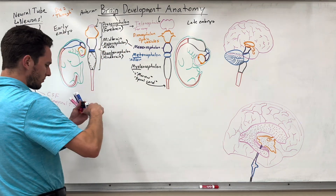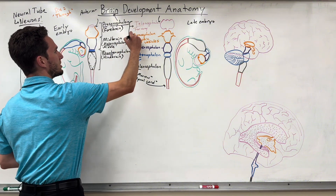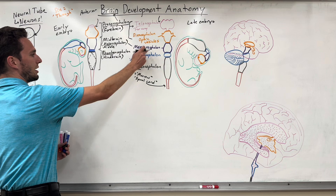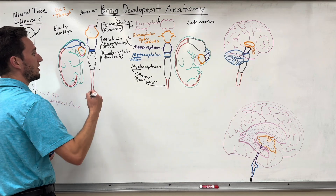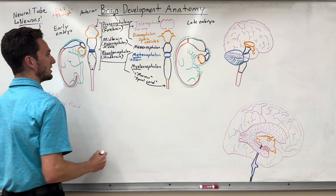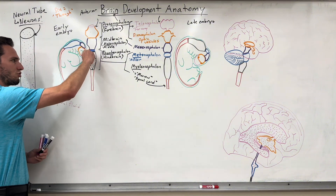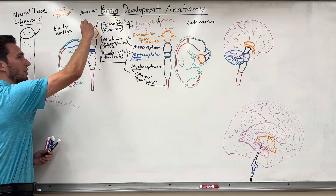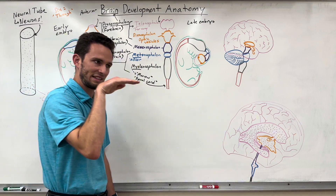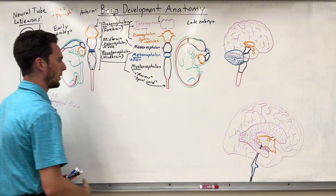To summarize the differentiation: the prosencephalon turned into the telencephalon and the diencephalon; the midbrain stayed the same as the mesencephalon; and at the very end, the rhombencephalon differentiates into both the metencephalon and myelencephalon. So you see one structure turning into two on the top and bottom, while the middle stays right in the middle — a nice mirroring parallelism to remember.